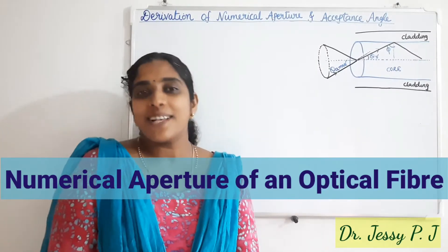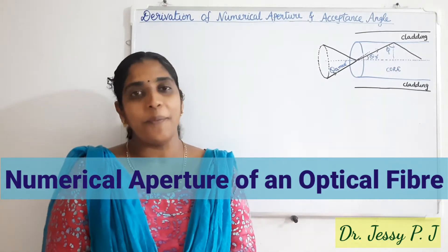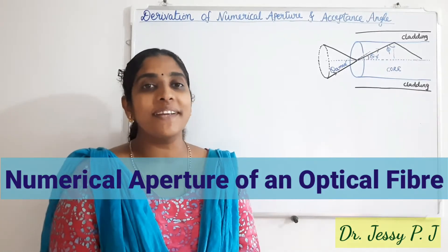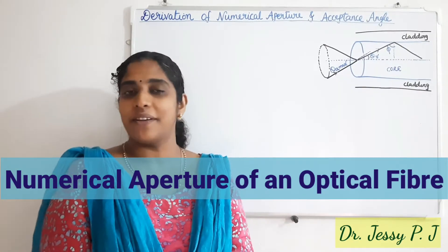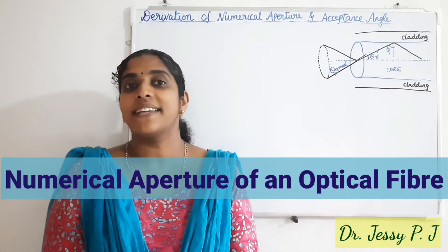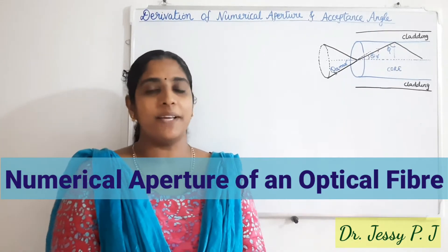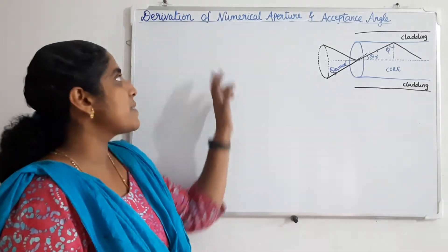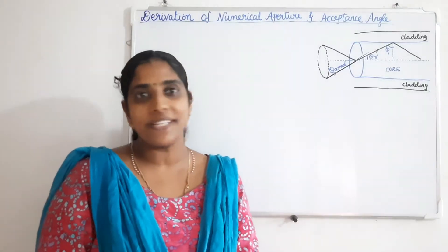Hi everyone. In the last video we have seen about optical fibers. We have discussed total internal reflection as the basic principle of optical fiber. We have also seen various terms like acceptance angle, acceptance cone, and numerical aperture. In this video we are going to derive an expression for numerical aperture and acceptance angle.